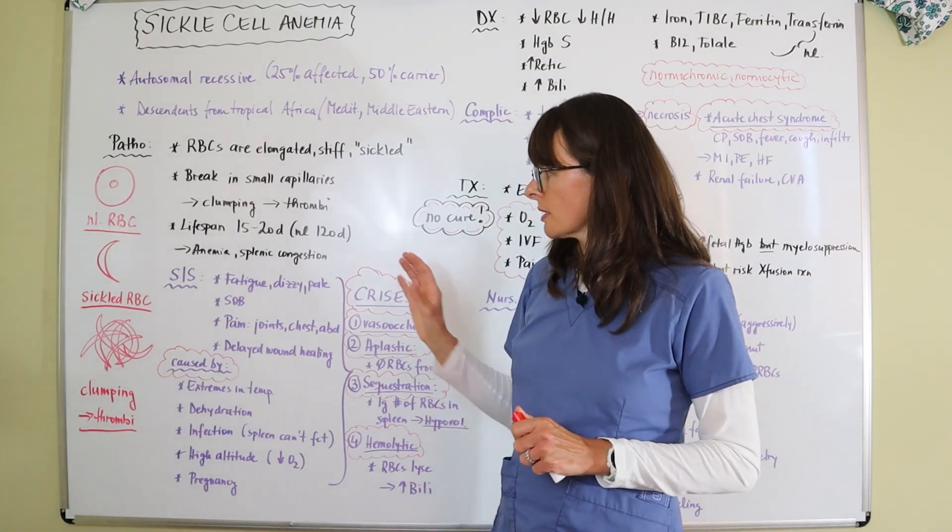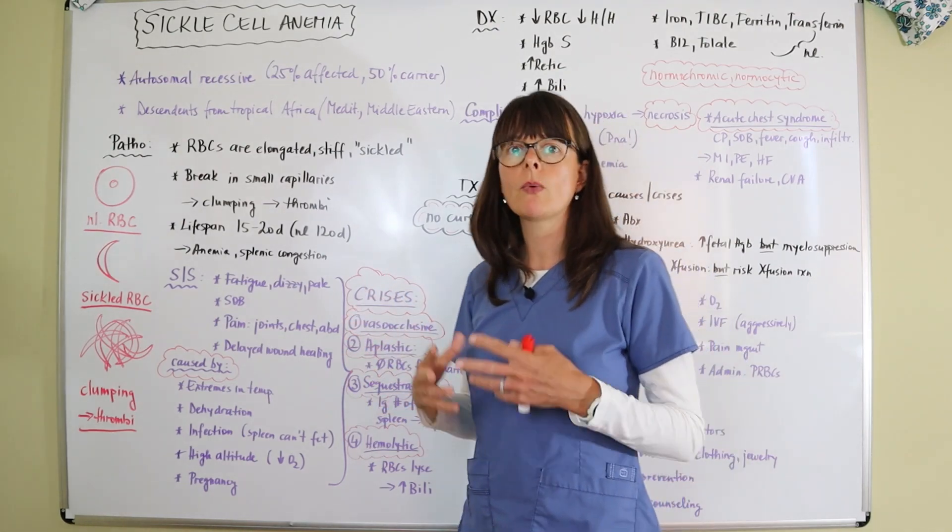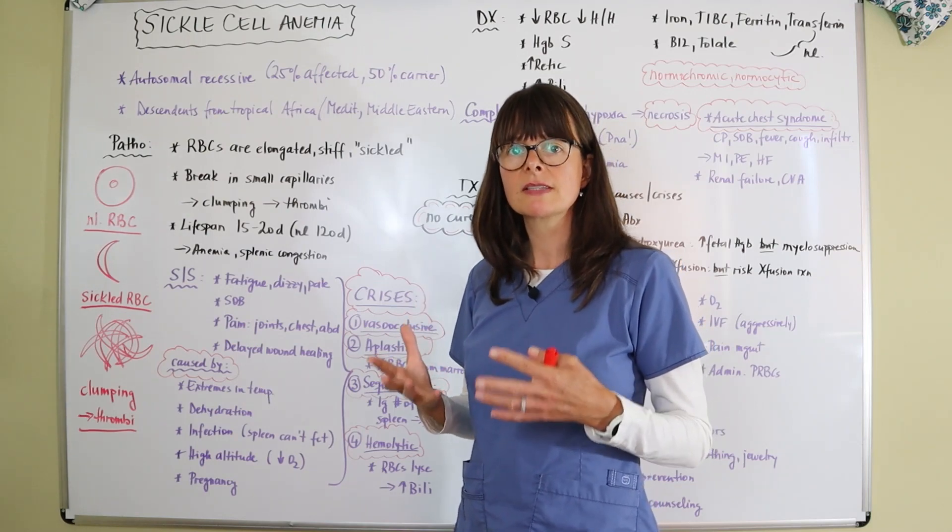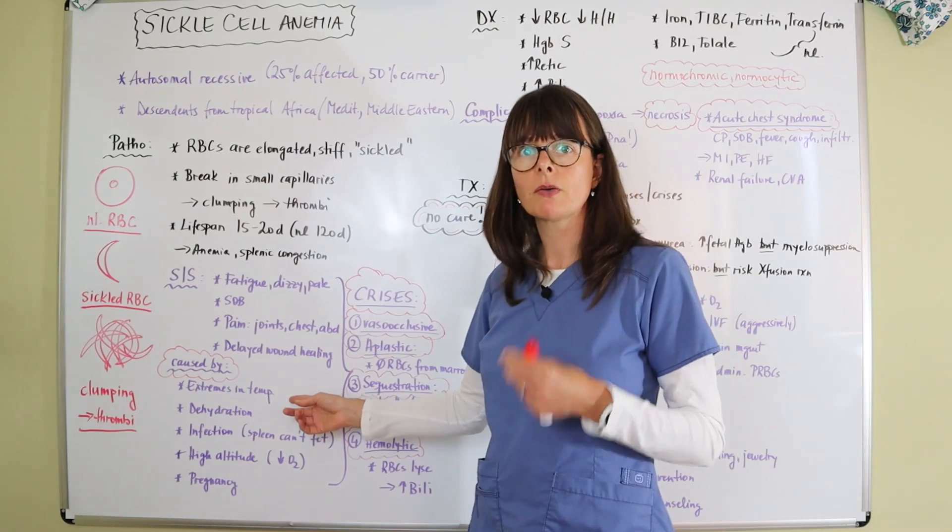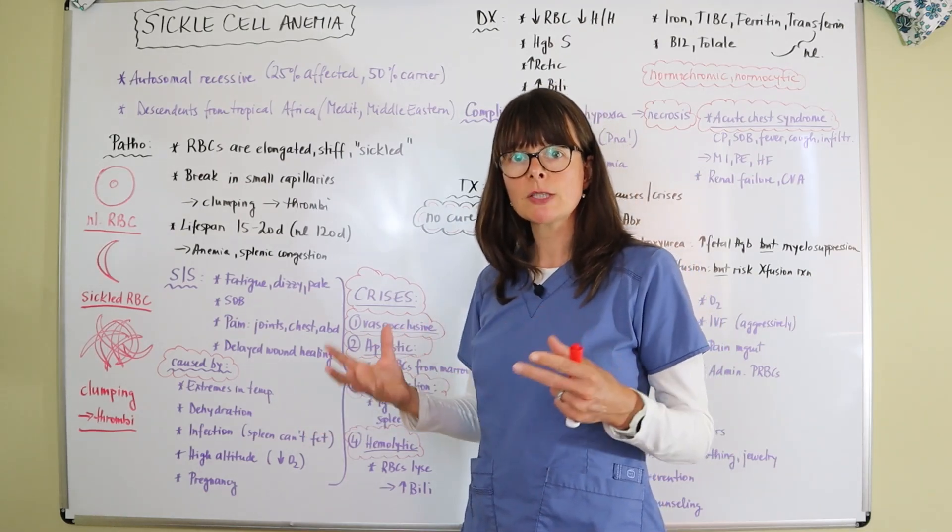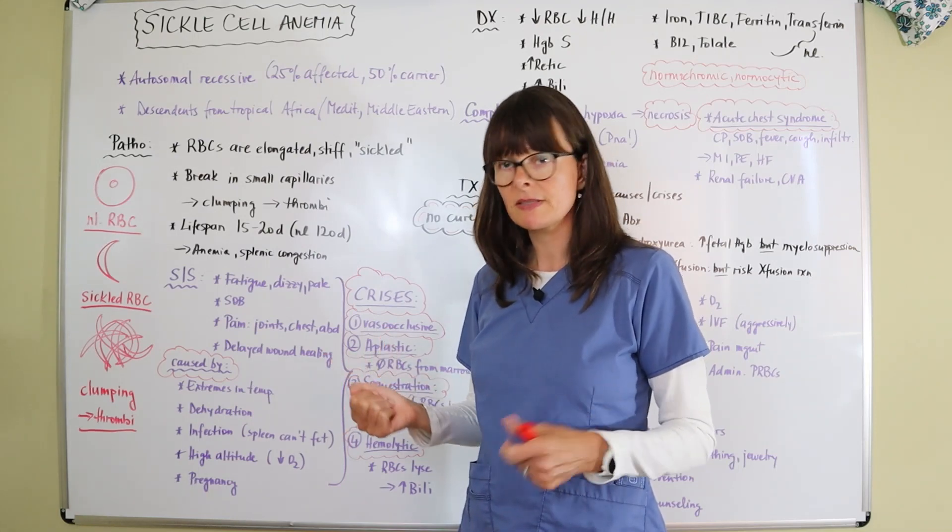Sickle cell patients don't necessarily always have symptoms, but things that exacerbate their symptoms are extremes in temperature, very cold and very hot, because they tend to make the patient more dehydrated or more vasoconstricted in their extremities if it's cold.